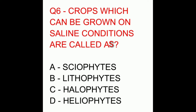Question six: crops which can be grown in saline conditions are called as. The options are skiophytes, lithophytes, halophytes, or heliophytes. The correct answer is halophytes.